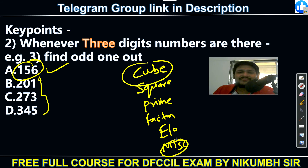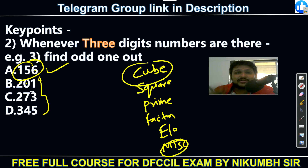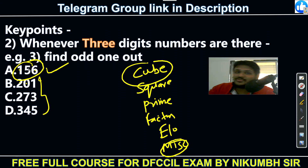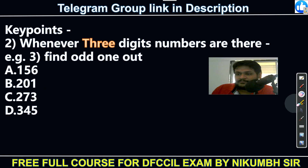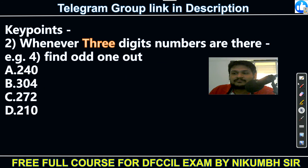When Cube, Square, Prime, and Factor logic all fail for three-digit numbers, use Even/Odd as the next check. After that comes miscellaneous — like digit sum patterns, first digit times second digit equals third digit, and similar creative logic. These are the common patterns used, though miscellaneous ones are hard to predict.